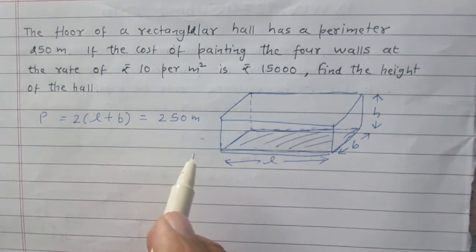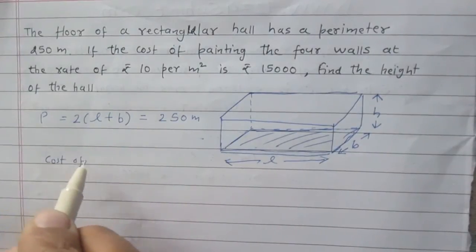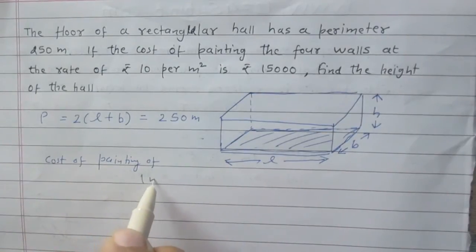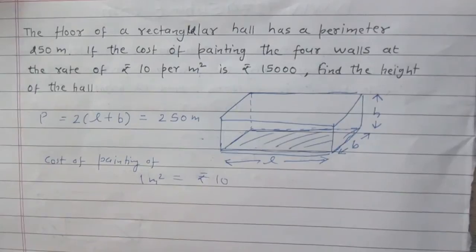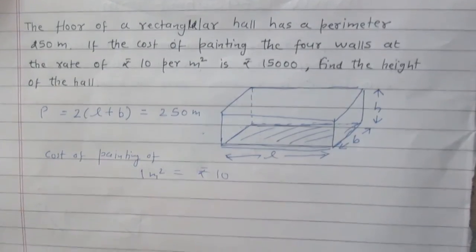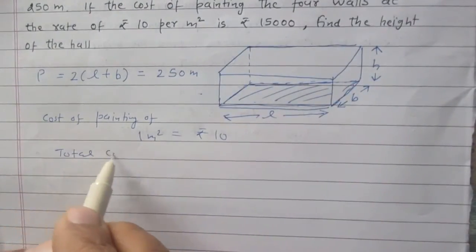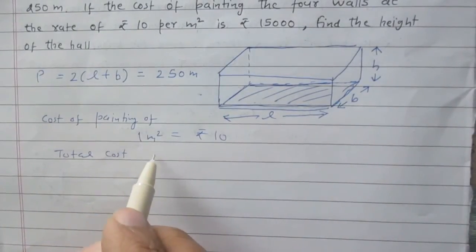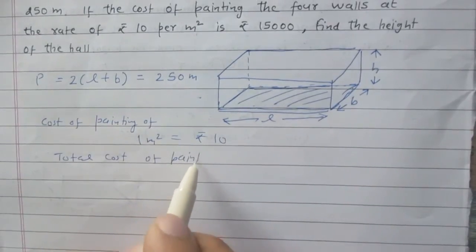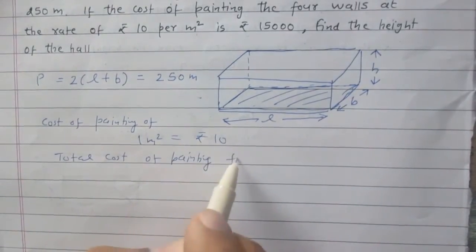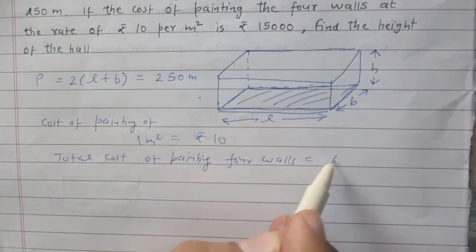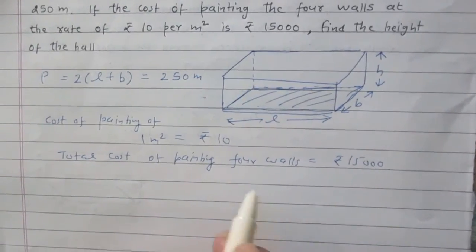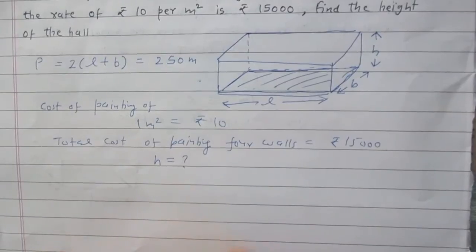Second, we are given that the cost of painting 1 meter square is Rs 10. Third, we are given that the total cost of painting the four walls is Rs 15,000. And we are to calculate the height of the hall.